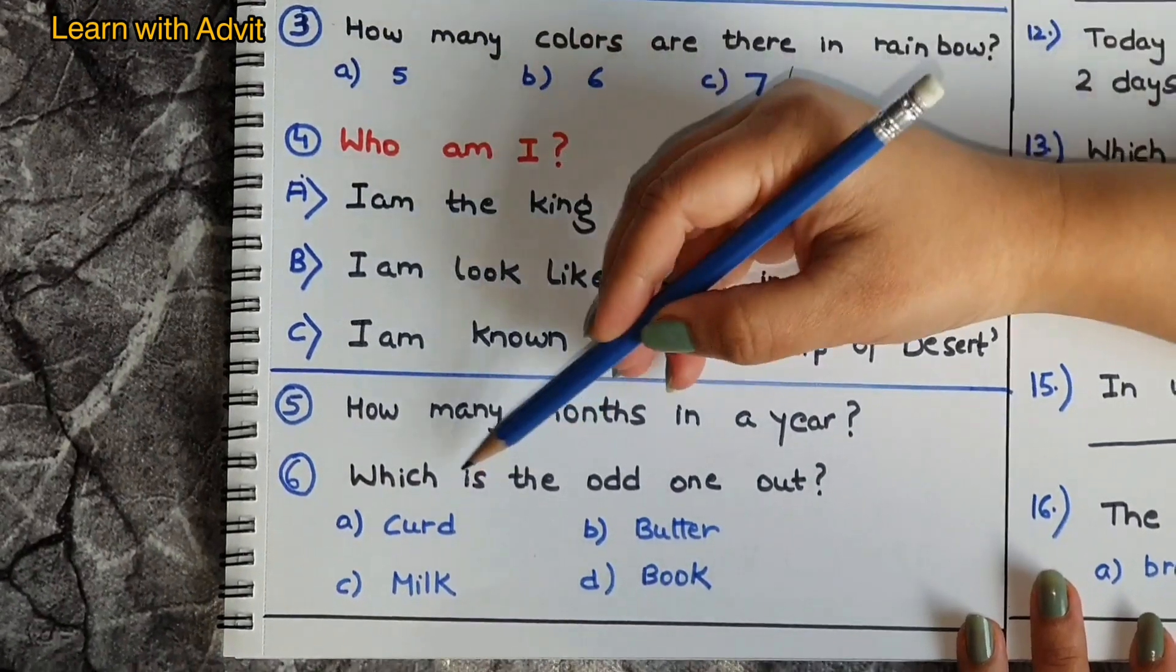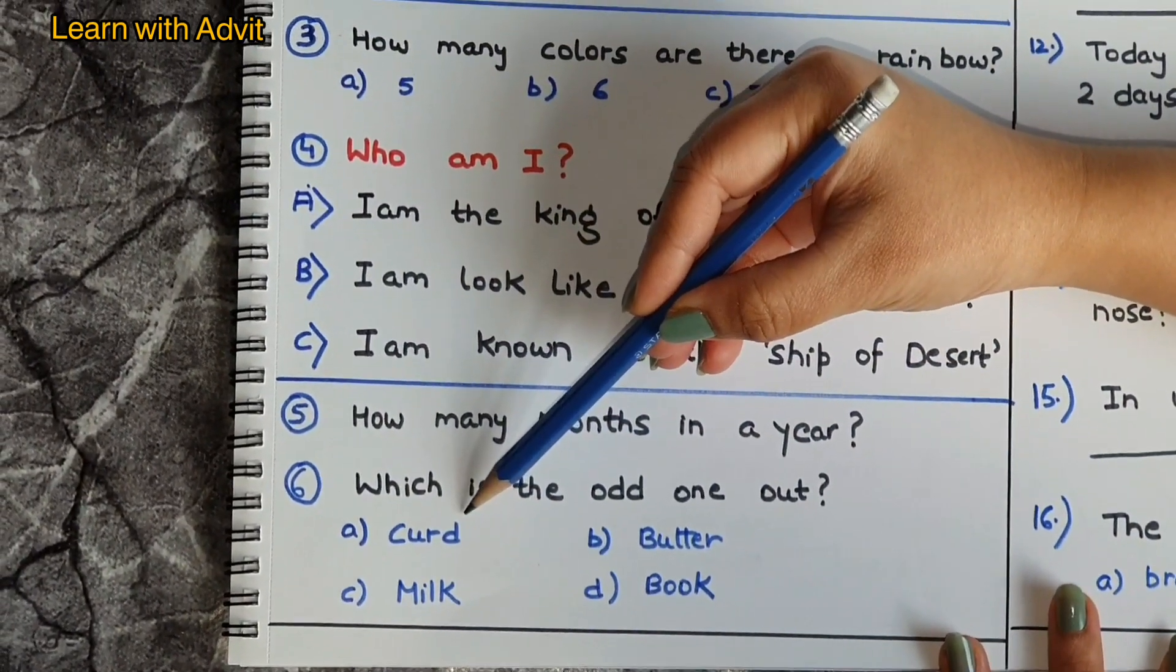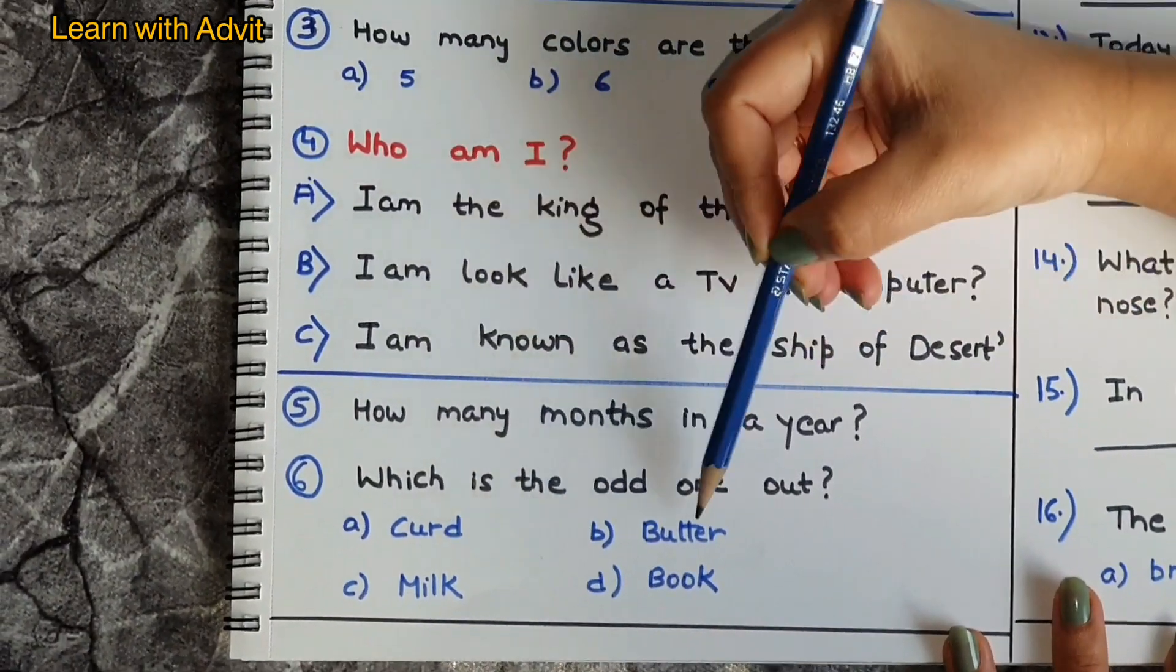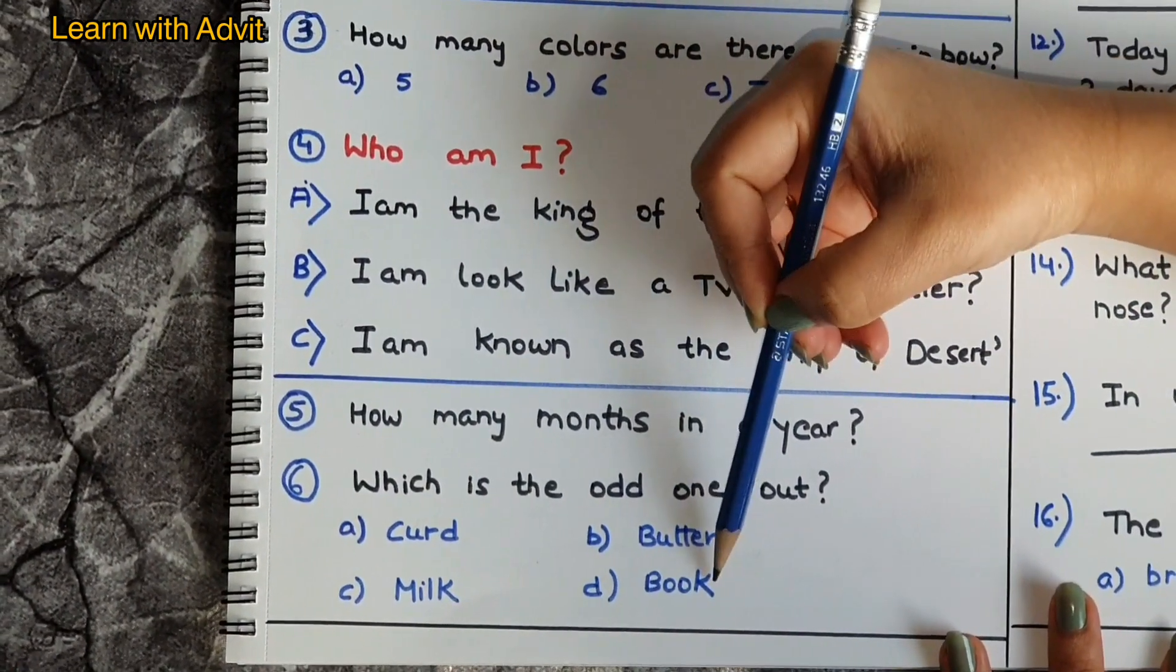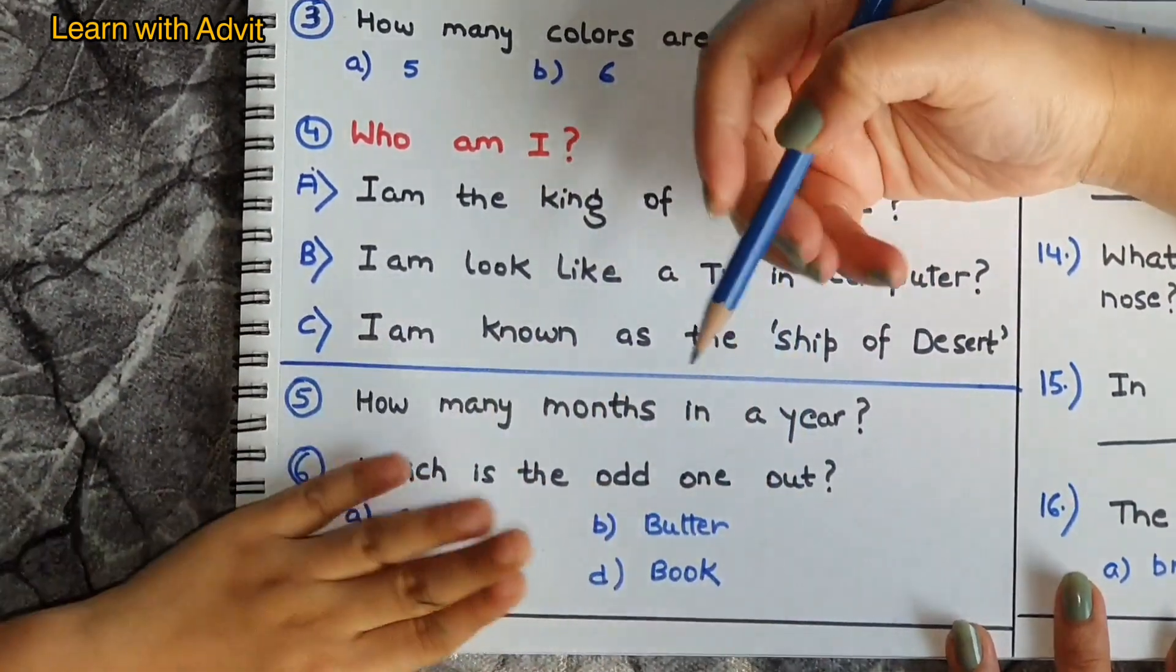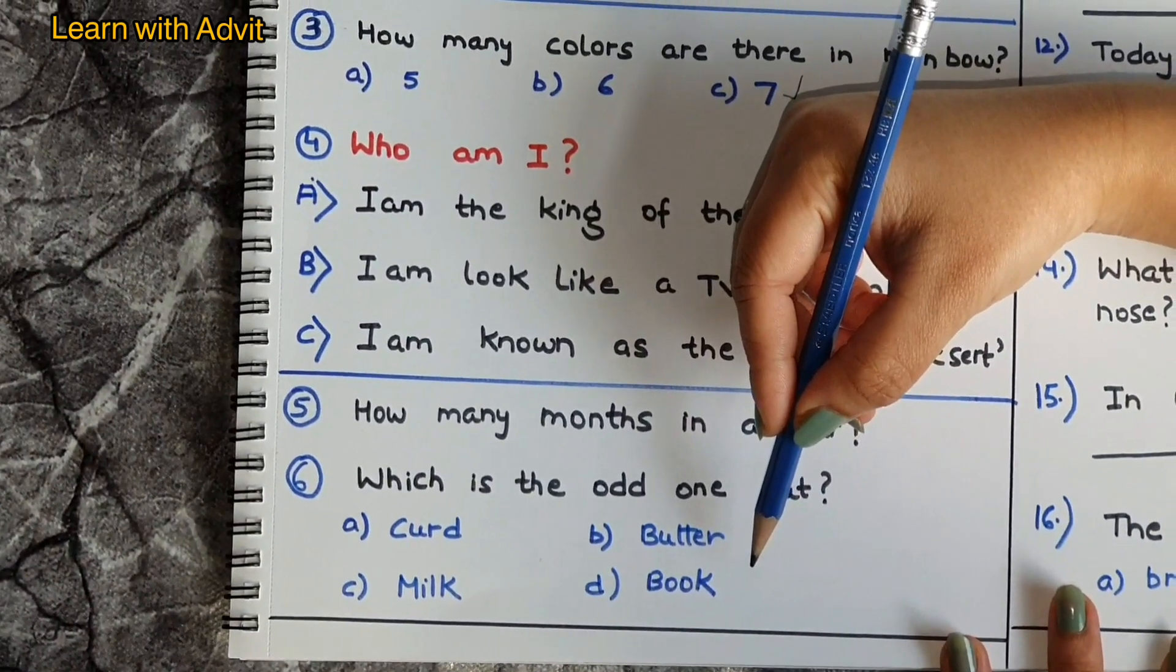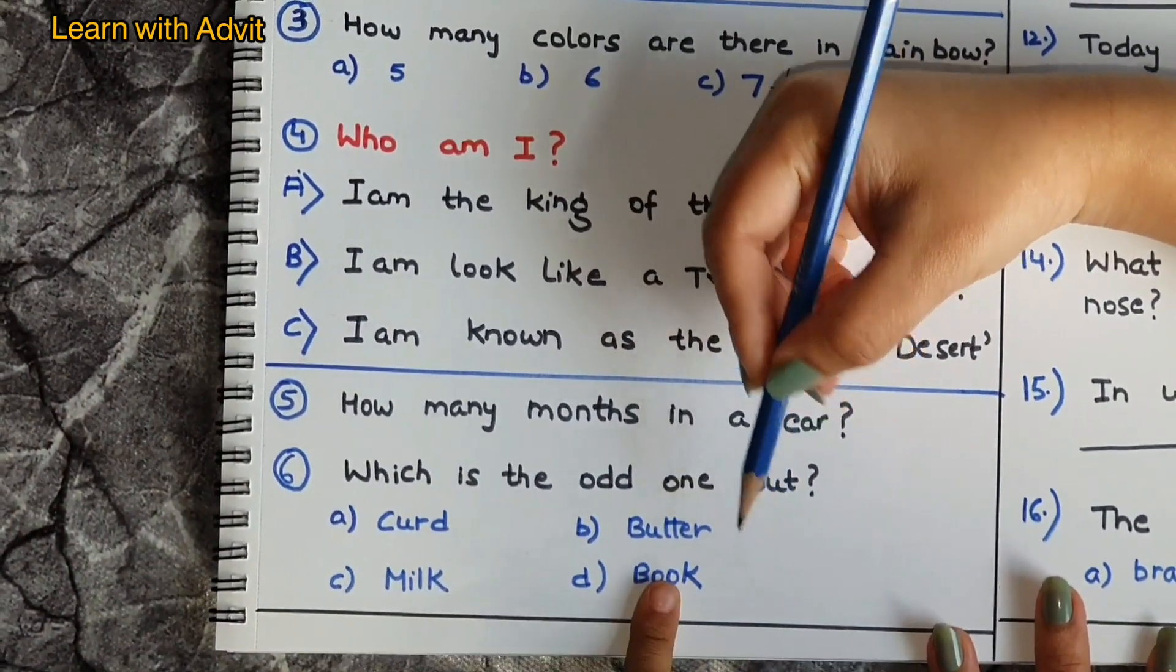Which is the odd one out? Come on, look. Curd, milk, butter, and book. These are things made out of milk, yeah. And book is made out of paper, so which one is odd? Book, very good.